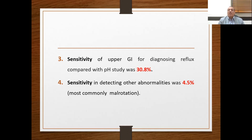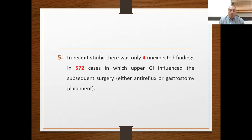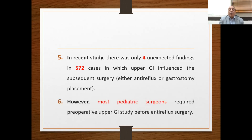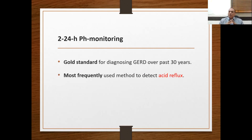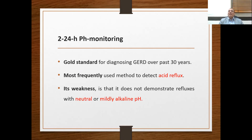The sensitivity of upper GI in detecting other abnormalities such as malrotation was about 4.5% in recent studies. There were only 4 unexpected findings in about 572 cases where upper GI affected subsequent surgical decisions. Despite this data, most pediatric surgeons still request preoperative upper GI before antireflux surgery. The second investigation is the 24-hour pH monitoring, which was the gold standard for diagnosing acid reflux GERD over the past 30 years. Its weakness is that it doesn't demonstrate refluxes with neutral or mildly alkaline pH.